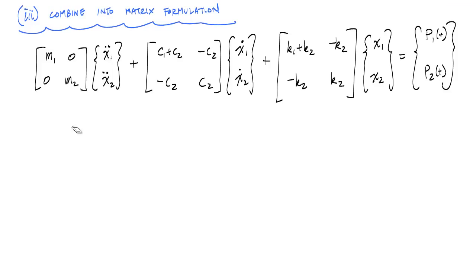M, I'll put the brackets, the brackets to represent a matrix, acceleration vector, plus a damping matrix, a velocity vector, plus a stiffness matrix and a displacement vector, equal to a forcing function vector. And what we have here are two coupled ordinary differential equations representing our two-story structure.